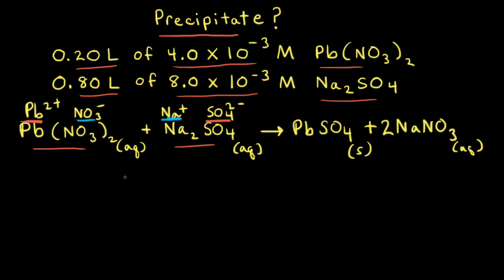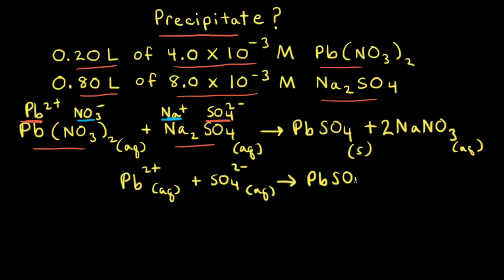Now that we know our possible precipitate, let's write a net ionic equation showing its formation. Lead two plus ions would come together with sulfate anions to form PbSO4. Since lead sulfate is our possible precipitate, we really only care about the concentration of lead two plus ions and sulfate anions in solution. We don't need to worry about sodium cations or nitrate anions because those are the spectator ions.